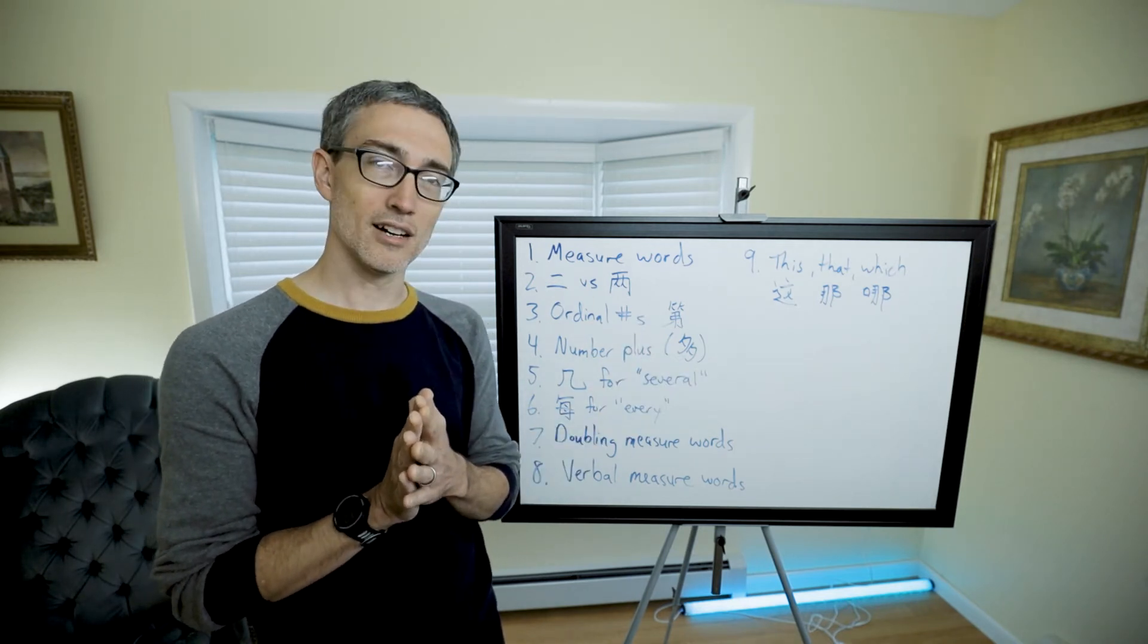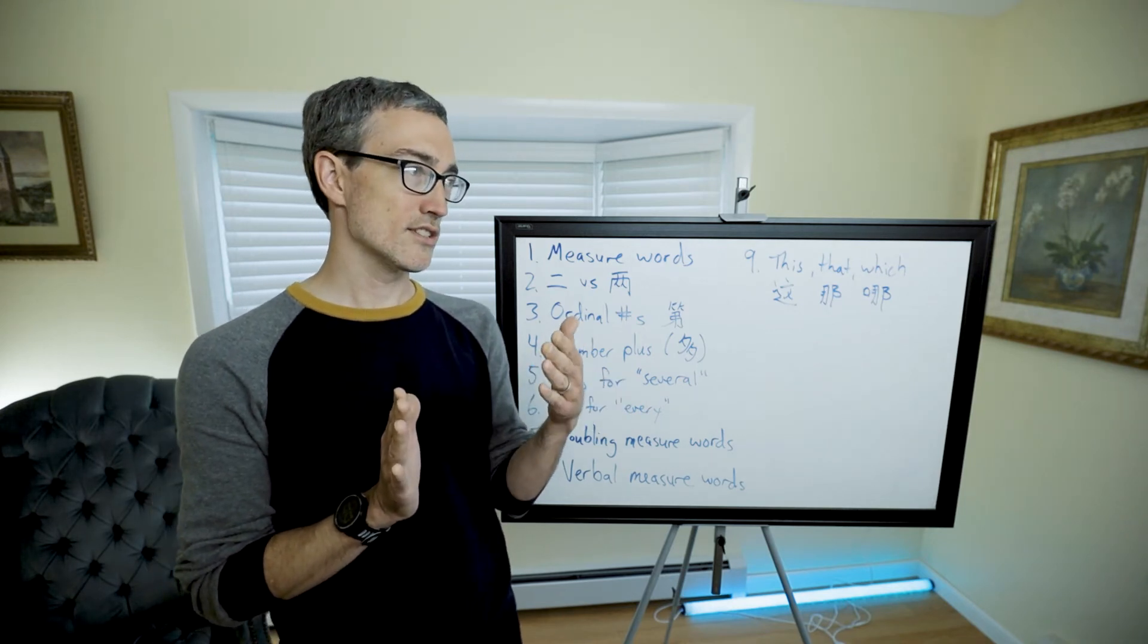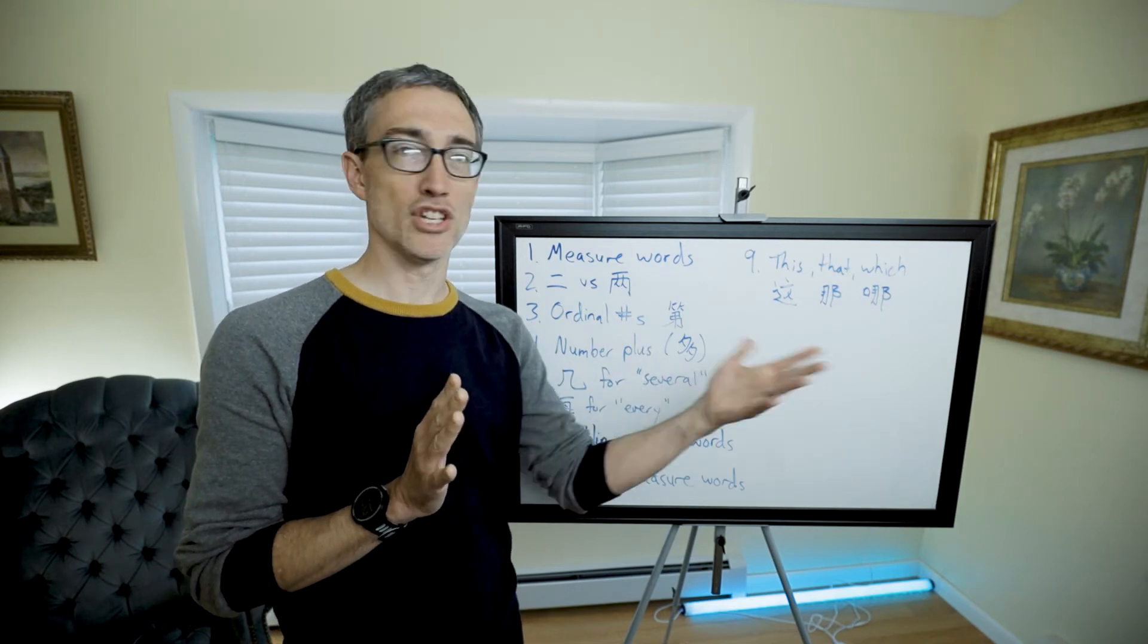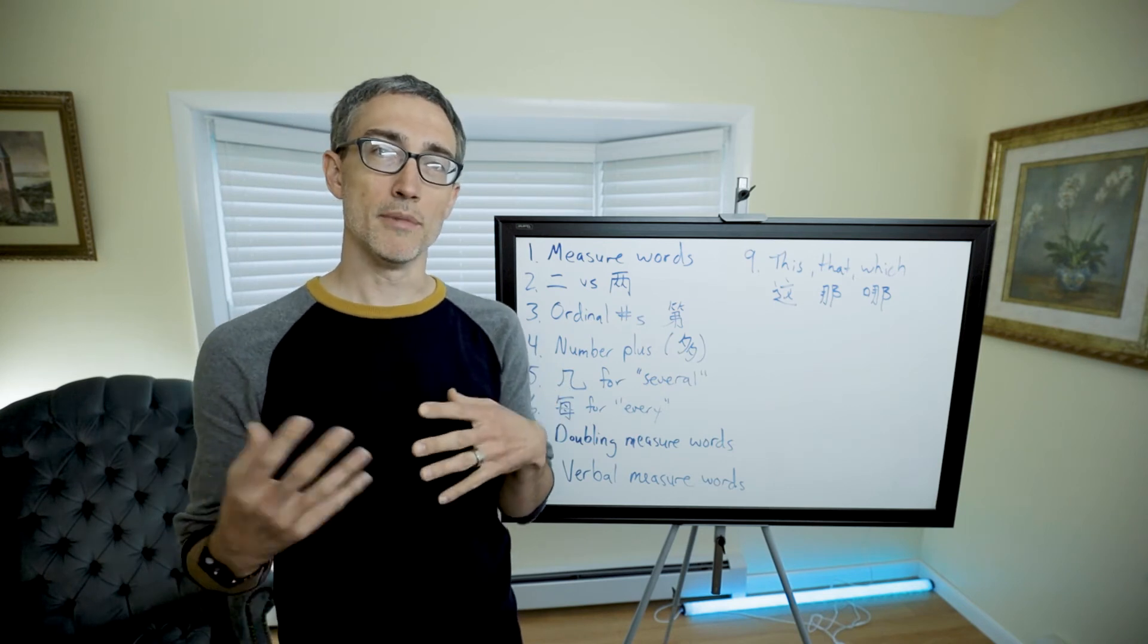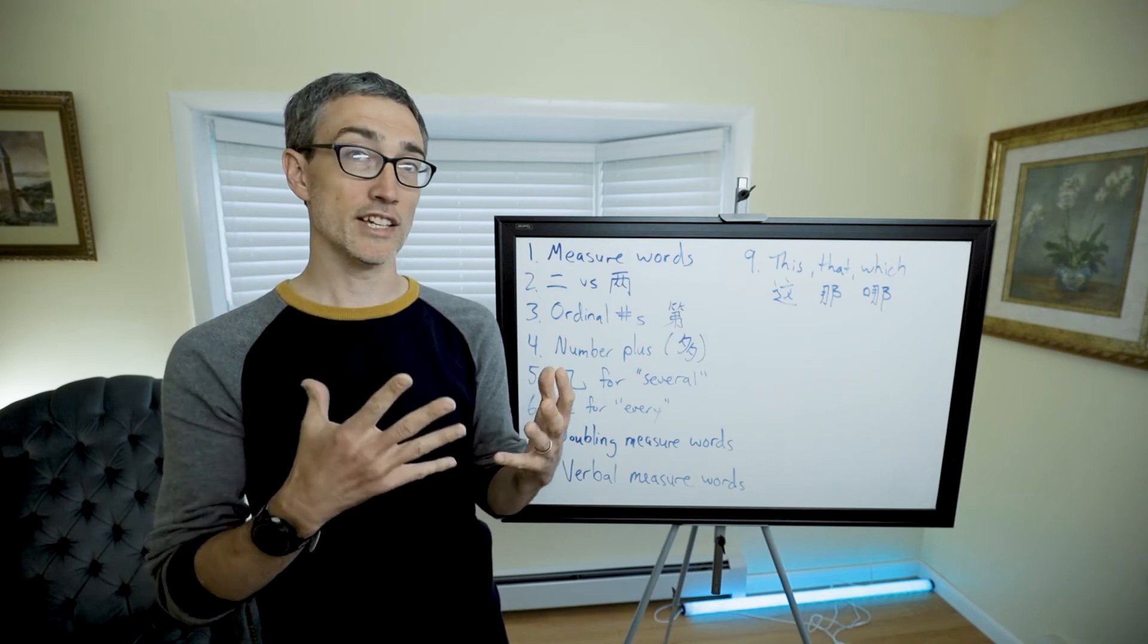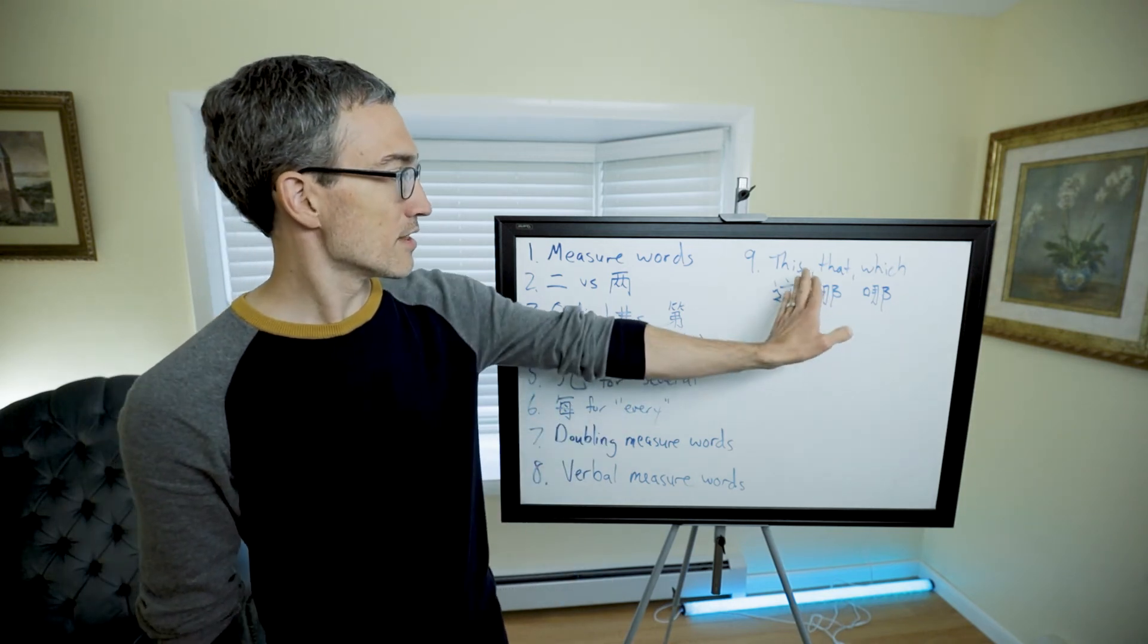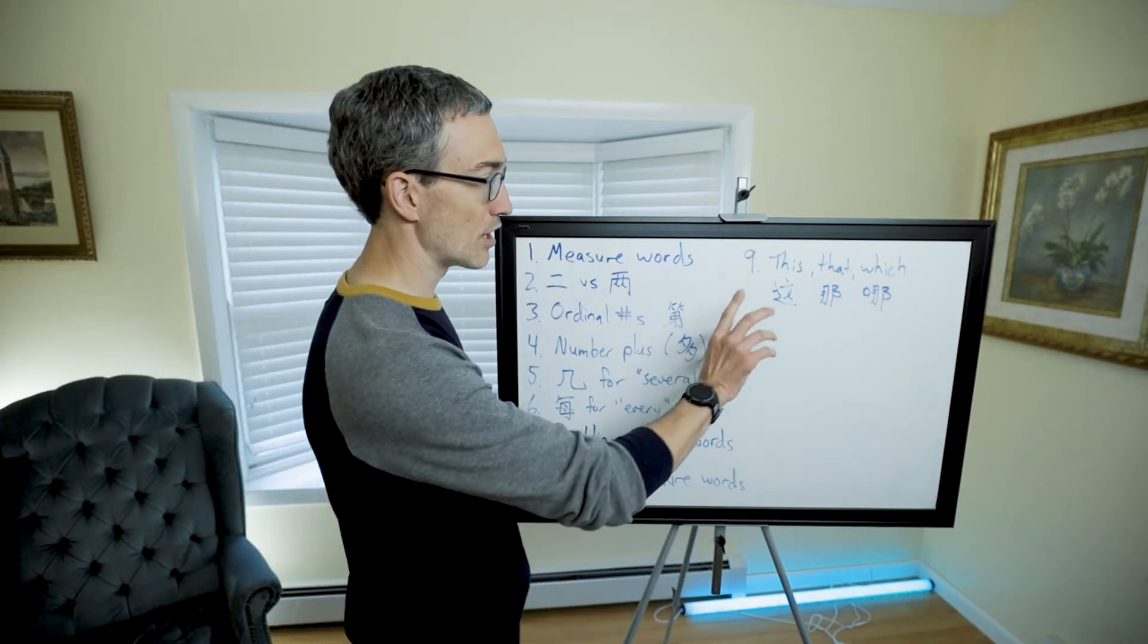Then we mentioned 趟 (tàng) meaning how many times a trip happens. 三趟北京 (sān tàng Běijīng), go to Beijing three times. And then we talked about 下 (xià), a verbal measure word for actions that are like striking or hitting, that kind of thing.